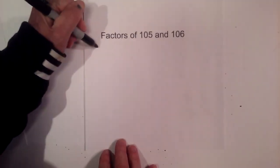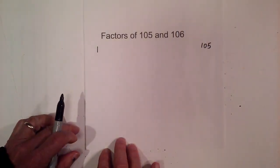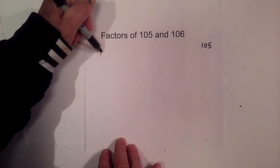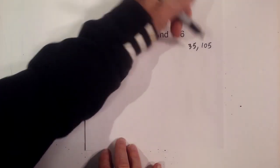I'll start with 105, so I'll begin with 1 times 105, and then 2 will not go into it, but 3 times 35 equals 105.